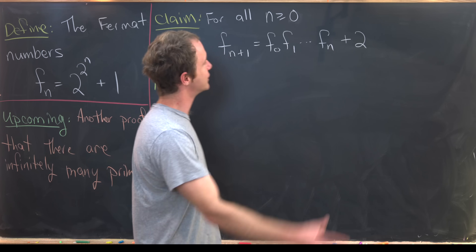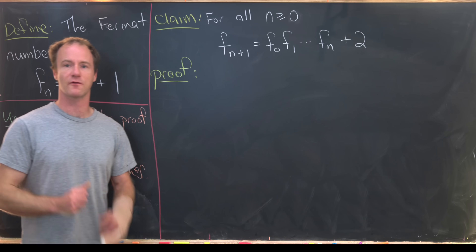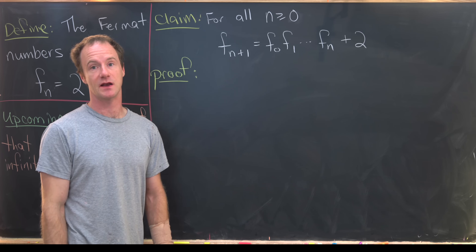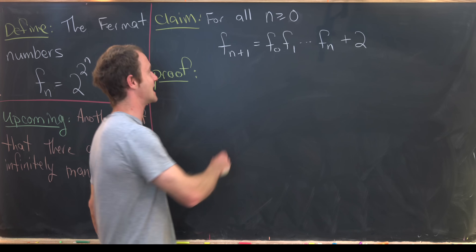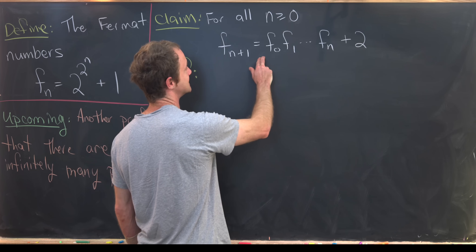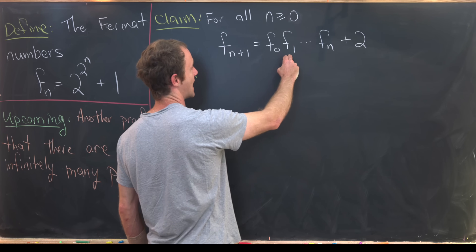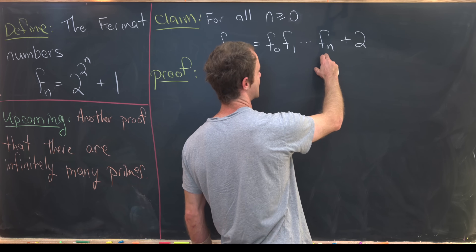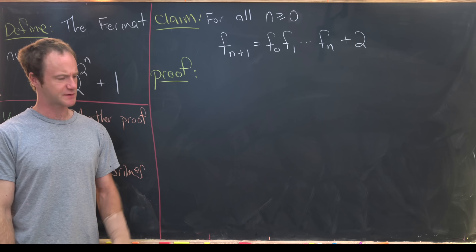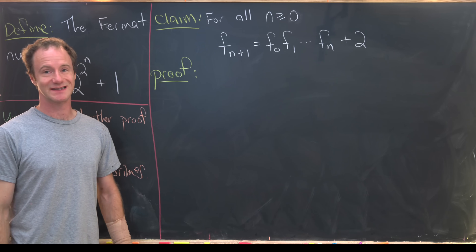The first thing we want to do is prove the following claim, which is a sort of recursion involving these Fermat numbers: F sub n plus 1 is equal to the product F0 times F1 all the way up to Fn, plus 2.